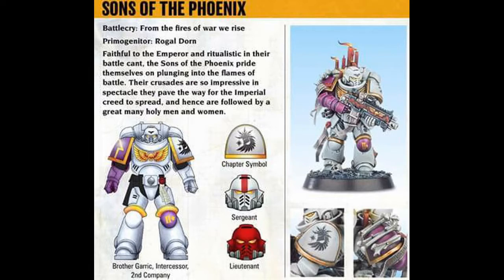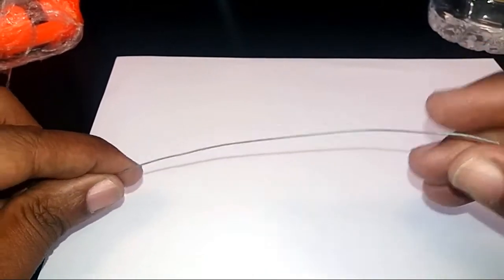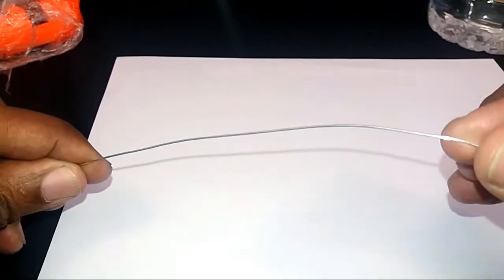Welcome back to SPECT. Today I want to show you how I created my Sons of Phoenix Primaris Space Marines candles. It's quite simple. First thing I did was get some steel wire, about two mil thick.